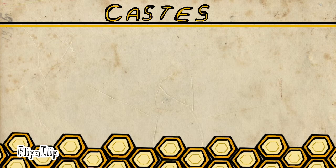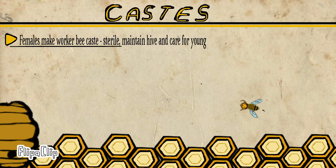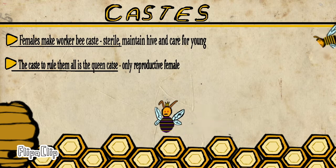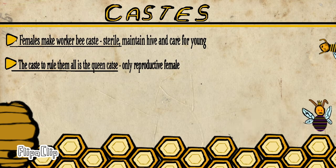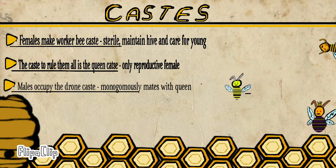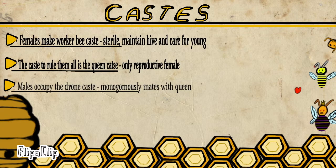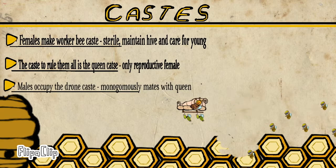In eusocial beehives, bees are placed into hereditary classes called castes based on their sex. The worker bee caste is made up of sterile females — this dominant class is responsible for maintaining the beehive and caring for the young of the colony. The queen caste is the sole reproductive female within the population. The short-lived drone caste is made up solely of males tasked with mating with a queen. All three castes work together as a eusocial communal system to give the population greater fitness.